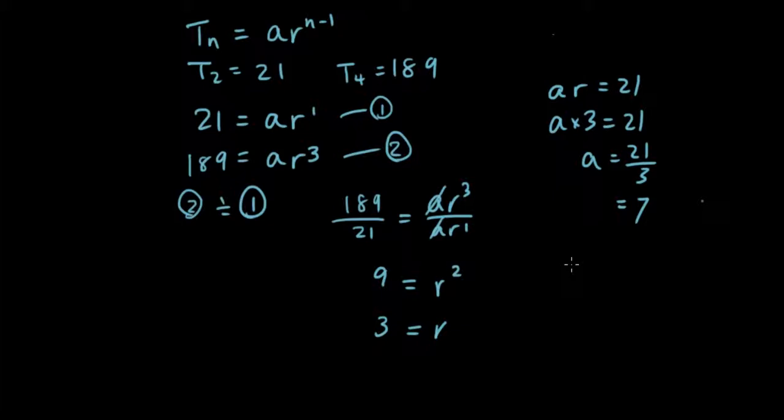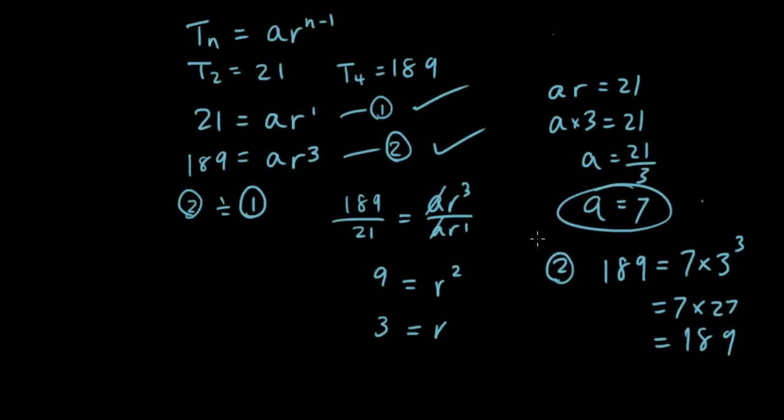So putting that into our other equation to test it out, equation 2, we have 189 equals 7 times 3 cubed. 3 cubed is 27, 7 times 27 which is 189. So we have passed both checks. 1 is satisfied, 2 is satisfied with A equals 7 and R equals 3.